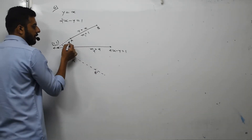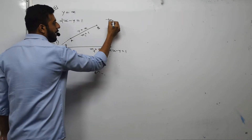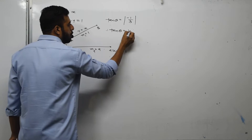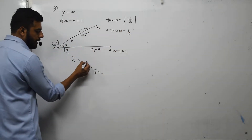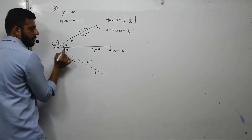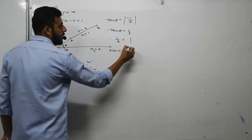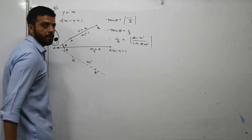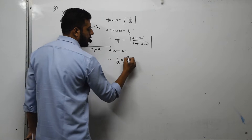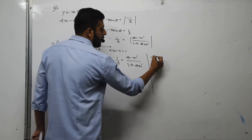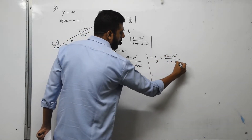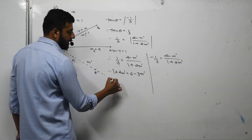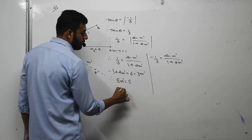The angle between the two lines is: tan theta equals (M1 minus M2) upon (1 plus M1·M2), giving tan theta equals 1/3. Now, calling the slope of line A prime B prime as M prime, since the thetas are the same, we write: 1/3 equals the modulus of (M2 minus M prime) upon (1 plus M2·M prime). Removing the modulus, 1/3 equals (2 minus M prime) upon (1 plus 2M prime). Cross-multiplying: 1 plus 2M prime equals 6 minus 3M prime, giving 5M prime equals 5, so M prime equals 1.